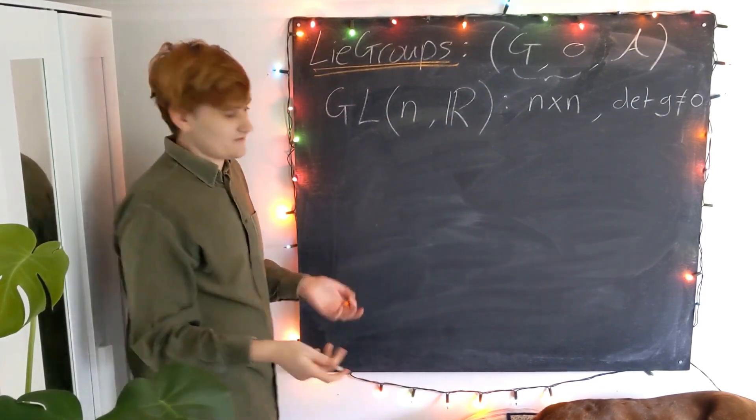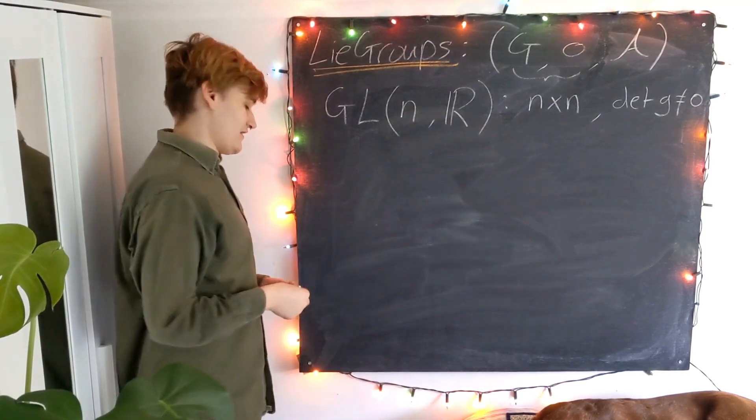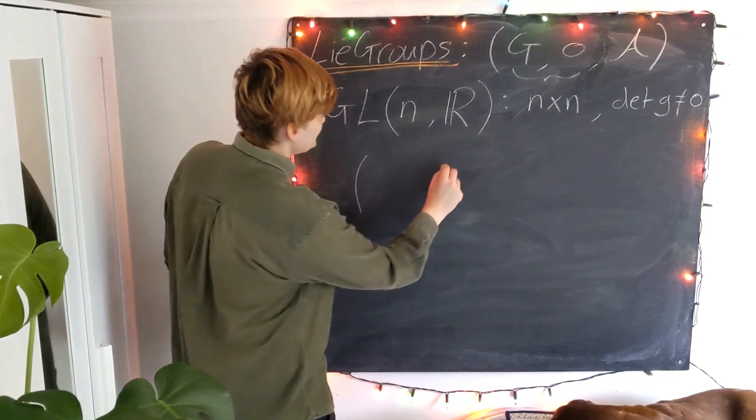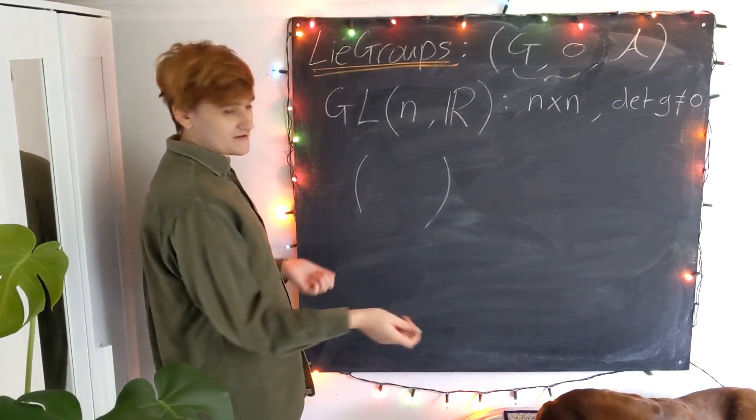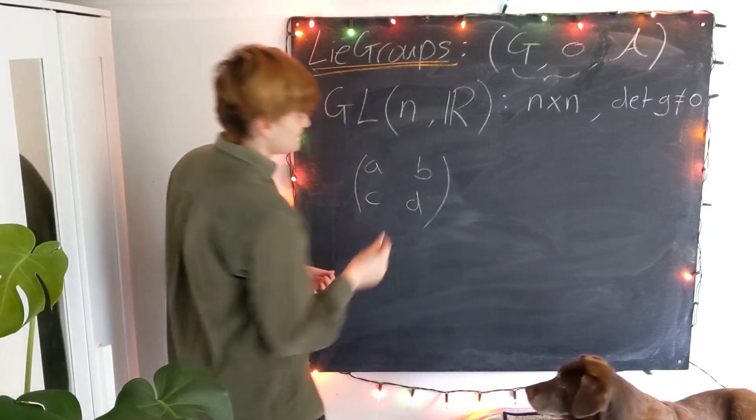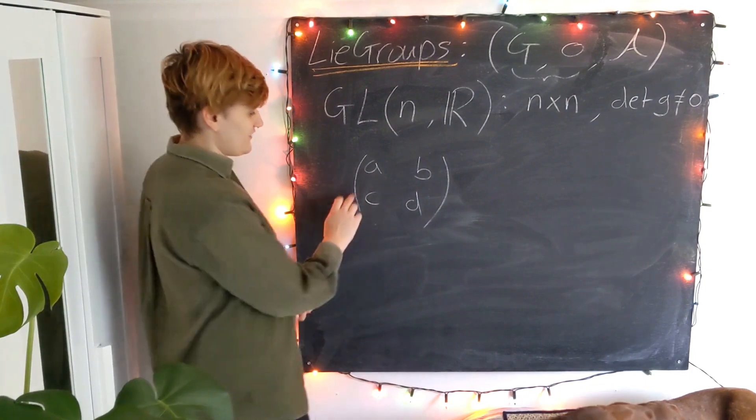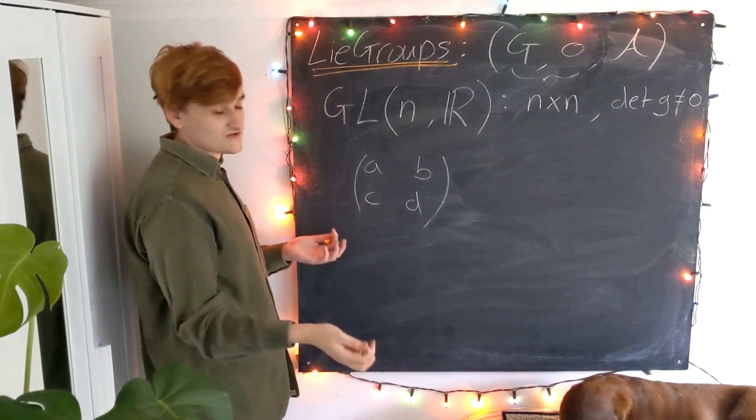So how do we do this with Lie groups, and in particular these matrix groups, as they're known? So if I just take a simple example of a 2x2 matrix, it's going to have four components, which we call the matrix elements. So this is a 2x2 matrix, it's going to have four independent matrix elements.